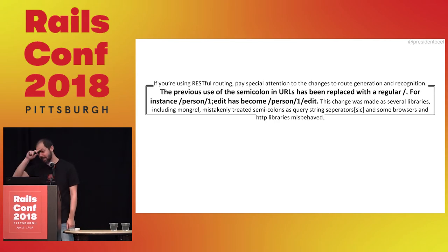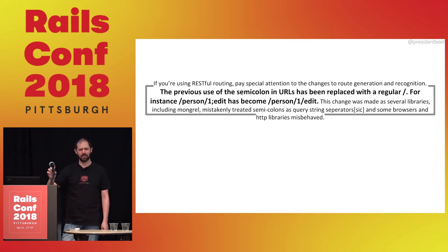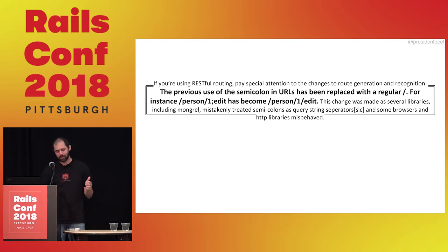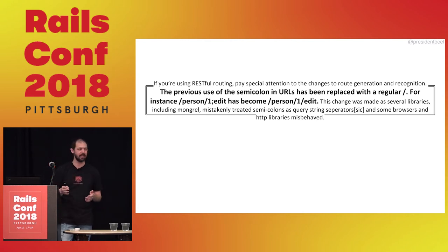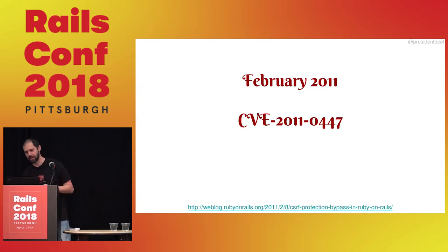Something else caught my eye — not security related. It used to be slash person slash one semicolon edit as the URL format. I wasn't around Rails in 2007, so I was like, what? This looks insane. They blamed it on libraries interpreting semicolon edit as part of query parameters, but I think they're totally justified in saying you shouldn't have semicolons as part of your URL.